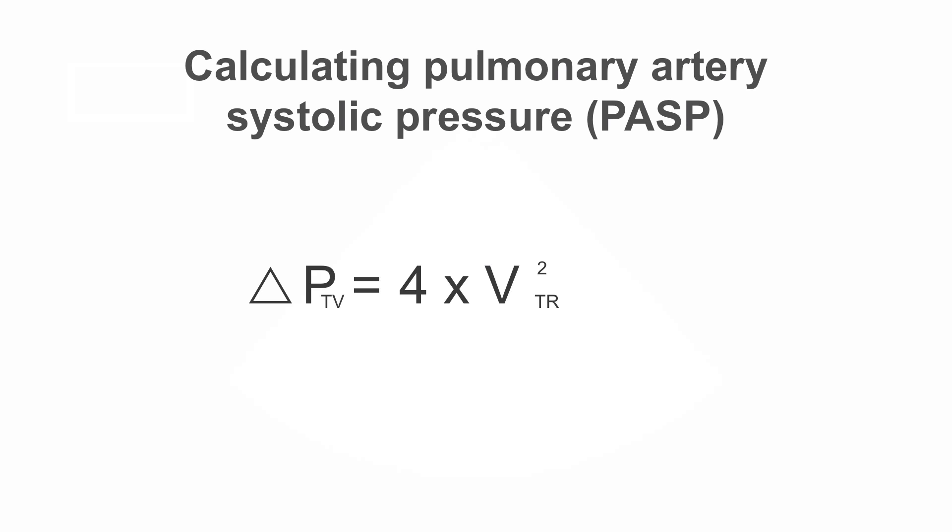We'll use the 291 centimeters per second obtained in the prior tracing, but need to change this value to meters per second, so it's now 2.91. With this, we can calculate the pressure gradient across the tricuspid valve. It's 33.9. Now we have the delta pressure.